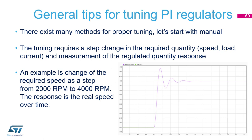The manual method requires a step change in the required quantity — let it be speed, load, or current — and measurement of the regulated quantity response. On this picture is an example of the change of the required speed as a step from 2000 rpm to 4000 rpm, and the response is the real speed over time in violet color. You can see oscillations; you can see overshoot.